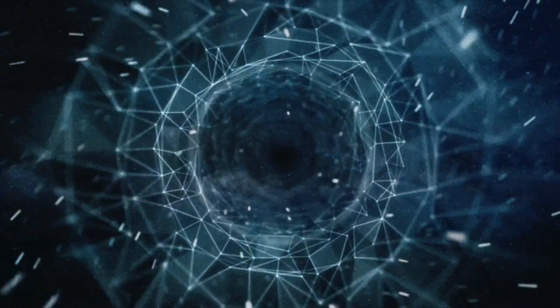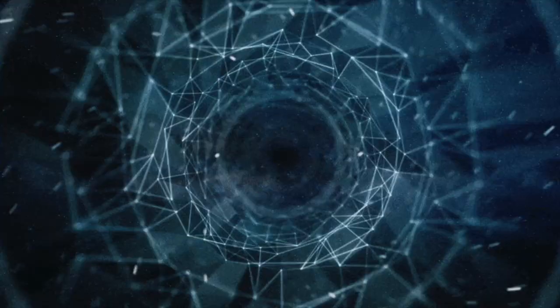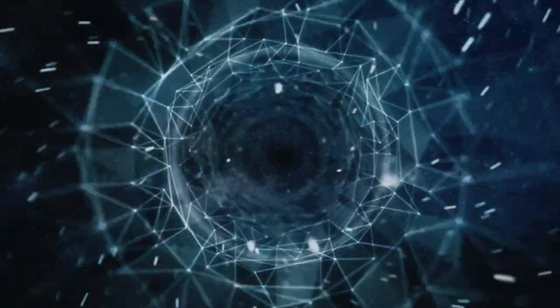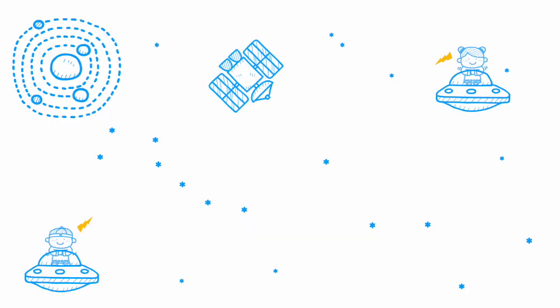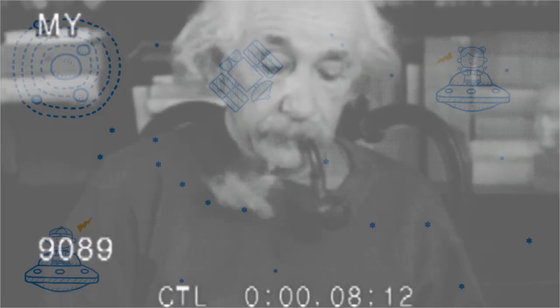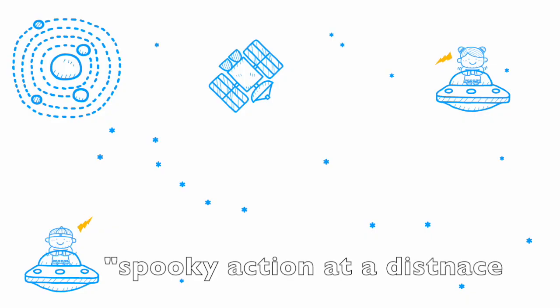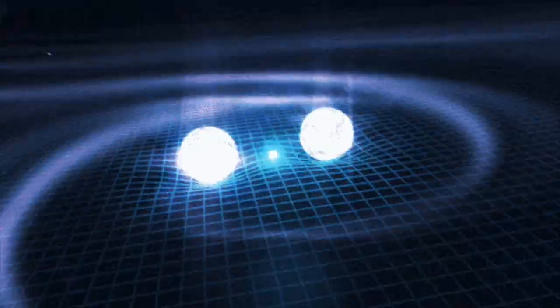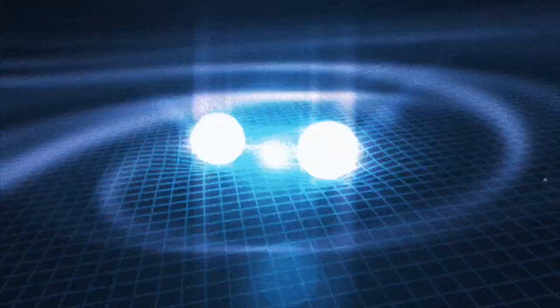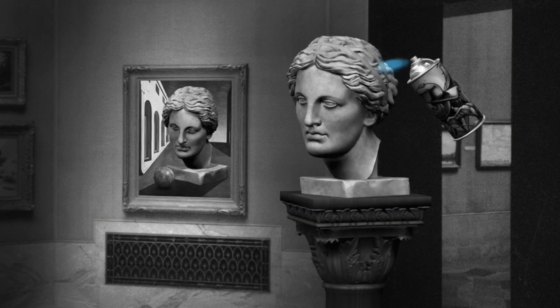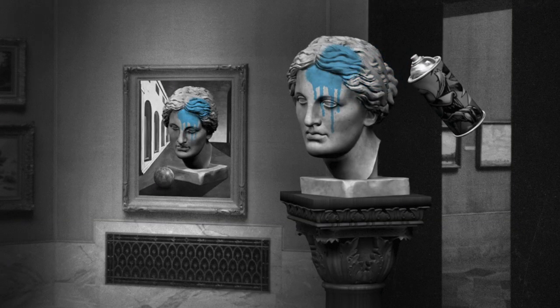Get ready to unravel the secrets of particles that are interconnected in ways that seem to defy the laws of classical physics. Quantum entanglement is a phenomenon that Albert Einstein famously called spooky action at a distance. It's a property of quantum systems where particles become interconnected in such a way that their states are instantly correlated, regardless of the physical distance between them.